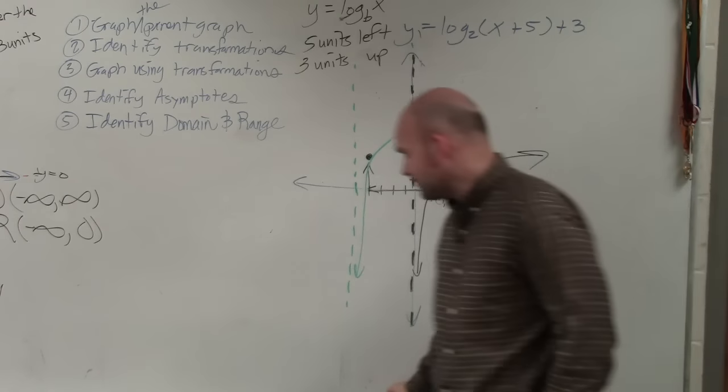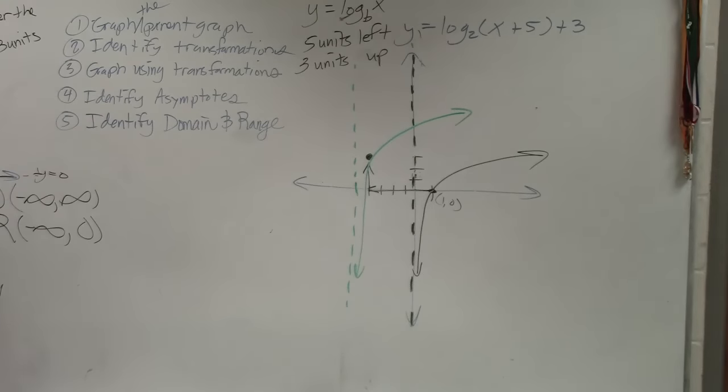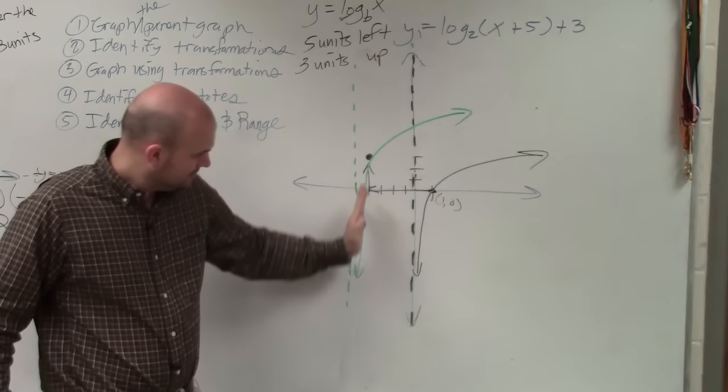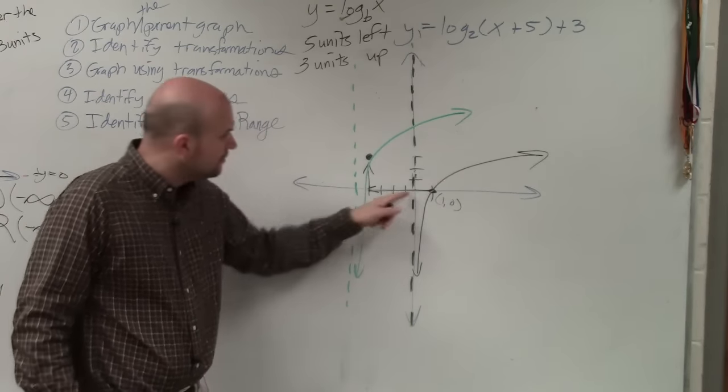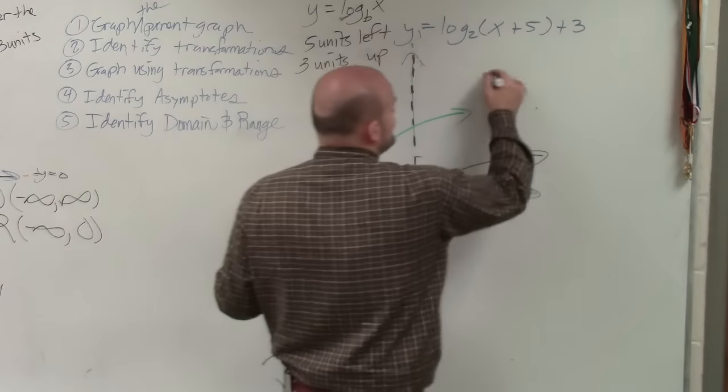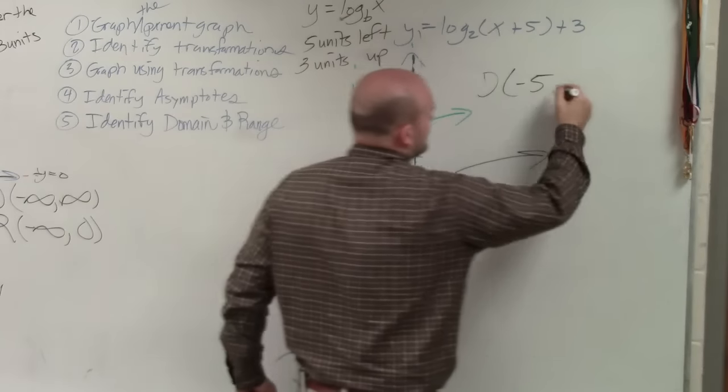Now, last thing is identify the domain and range. So remember, domain was the set of all x values. So here, you guys can see that the domain went infinitely that way, infinitely that way. So the domain, how far to the left does this graph go? Oh, negative 5. 1, 2, 3, 4, 5. Yeah, it's only going to go as far as the asymptote. So the domain is from negative 5. Well, how far to the right does it go? Infinity. Infinity.